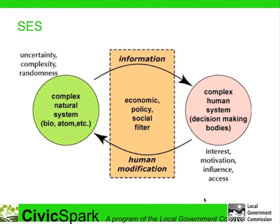Here is the concept of social-ecological systems in visual form. The green circle represents the natural realm; the pink circle represents the human realm. We gather information from the natural realm and filter it through our social structure, our interests, our values, etc. We use that information to make decisions about our behavior, our policy and management decisions, which then leads to a human modification of the natural world. And this continues to cycle in a feedback loop. As we impact the natural world around us, we gain new information from those actions, which then prompts us to change our policies or management practices.